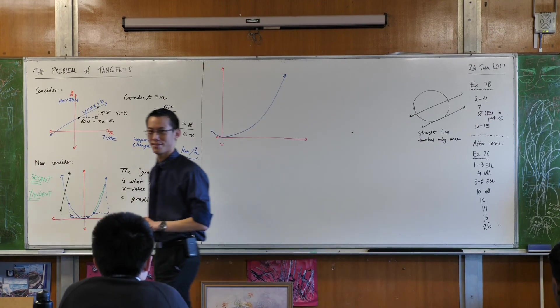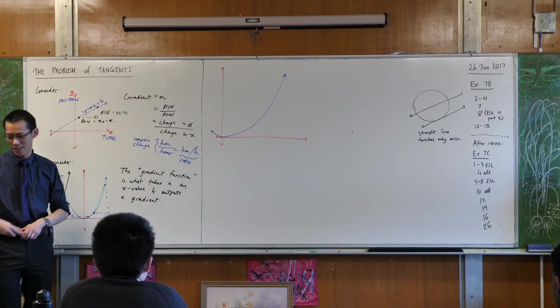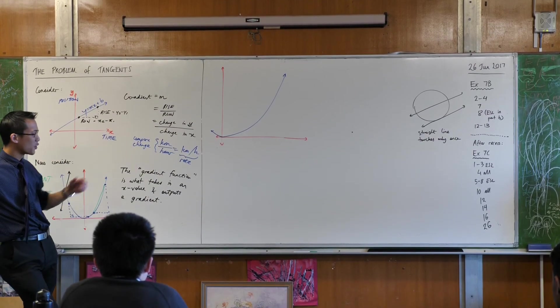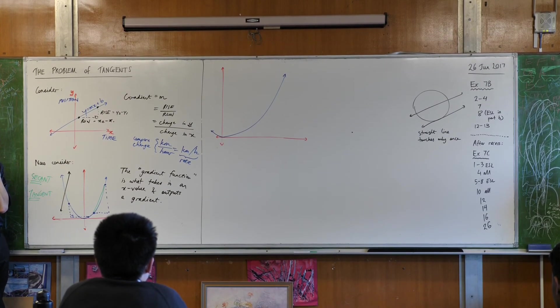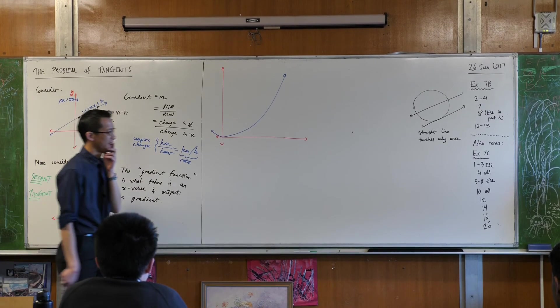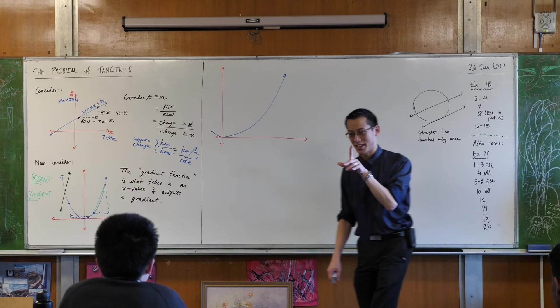Is there something we can add that's going to make this not a tangent and that a tangent? What's the difference between them? Someone else have a think. We said straight line. And we said touches only once. This is tricky, right?